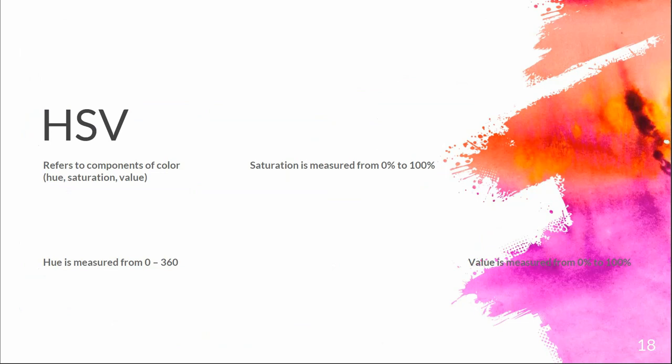HSV refers to the components of color: hue, saturation, and value. Saturation is measured from 0 to 100% and value is also measured from 0 to 100%. Hue ranges from 0 to 360, so we're limited to 360 different hues. But we can increase the number of colors exponentially by making adjustments to our value and saturation settings.